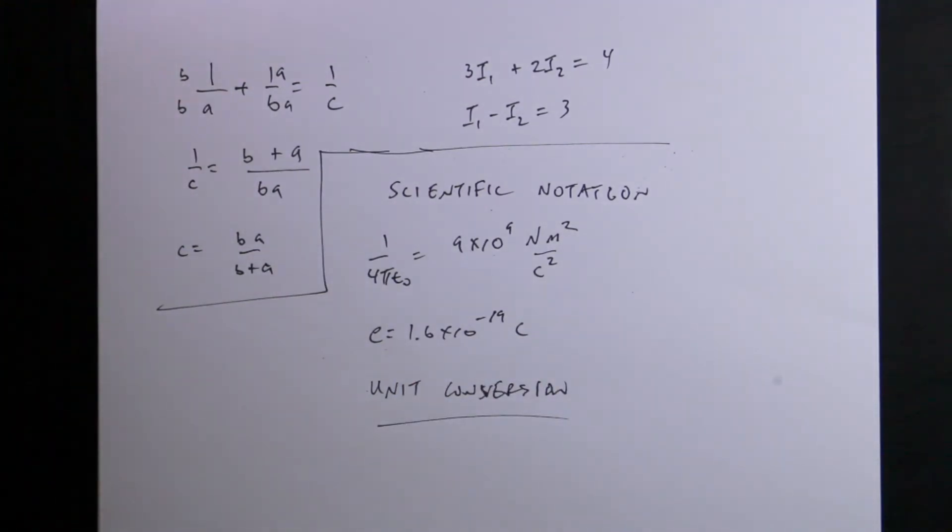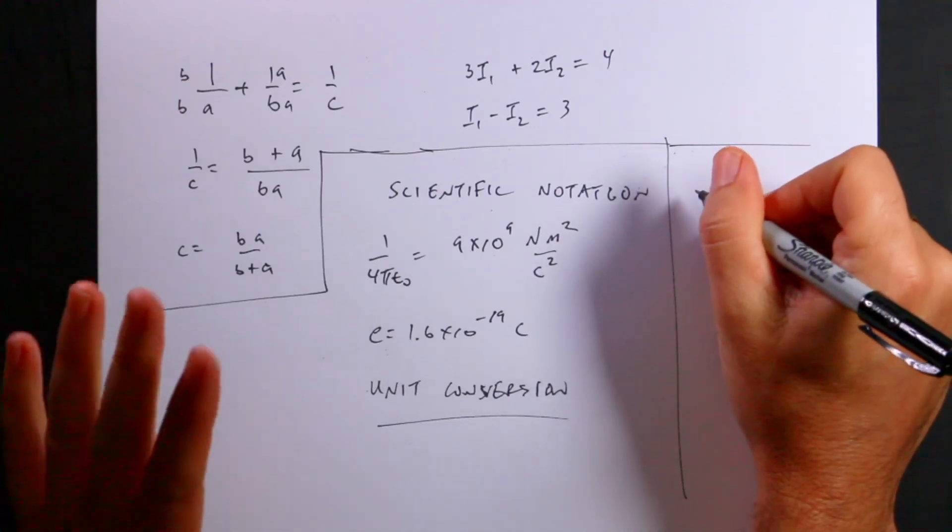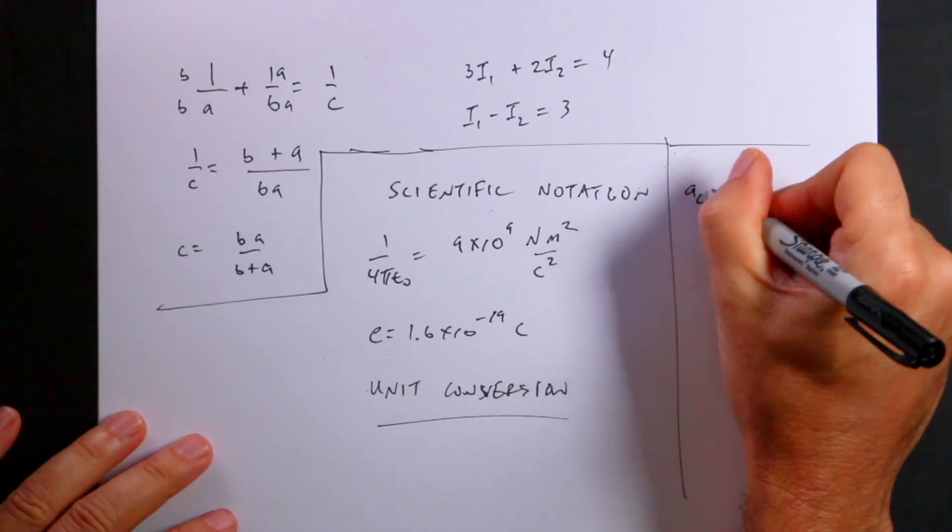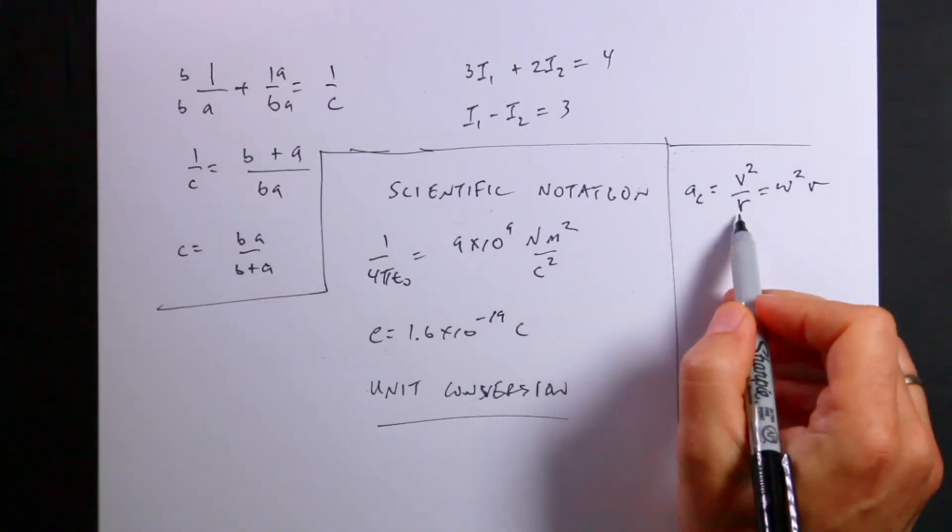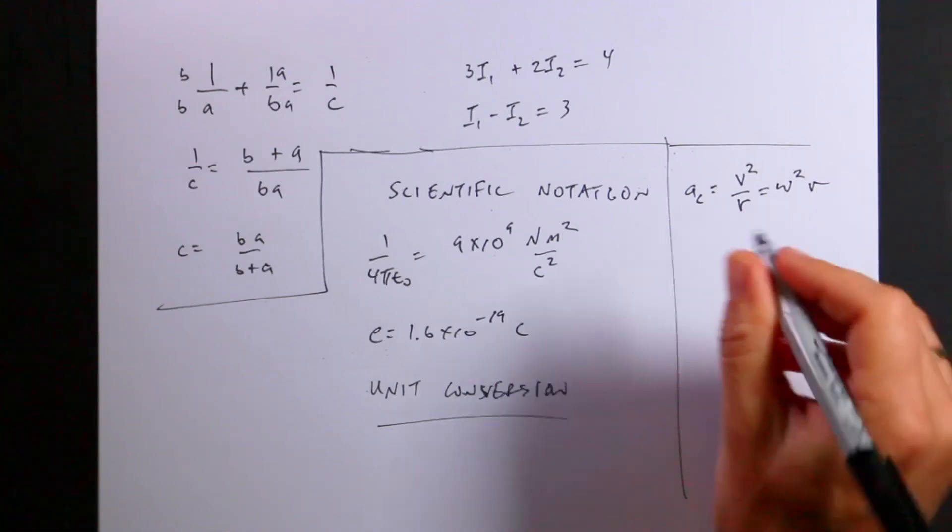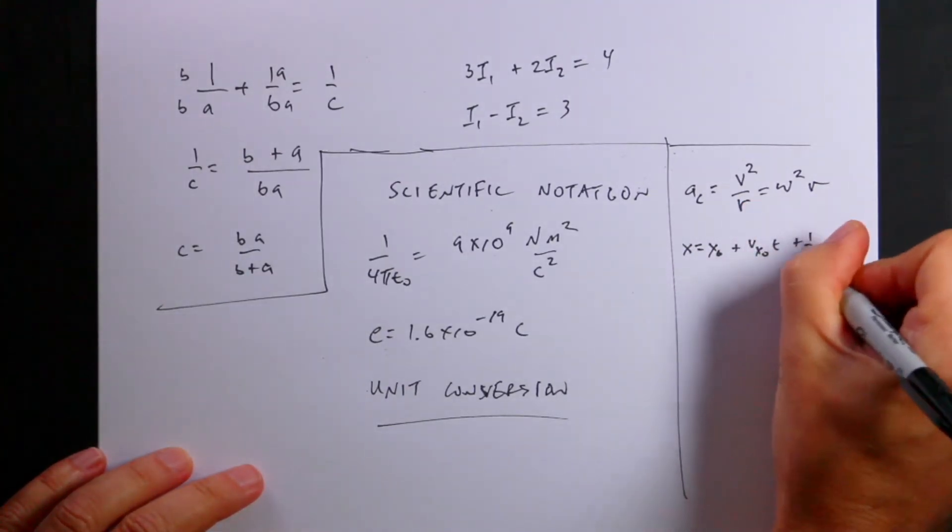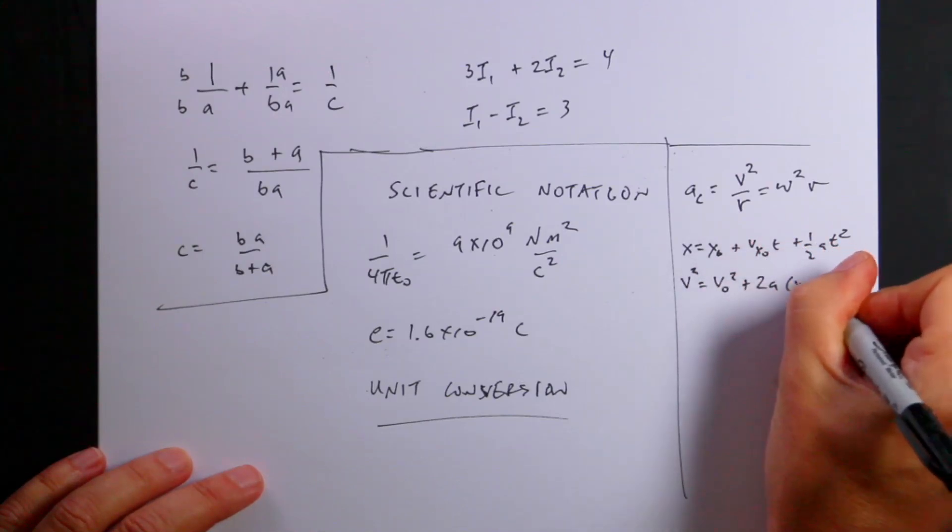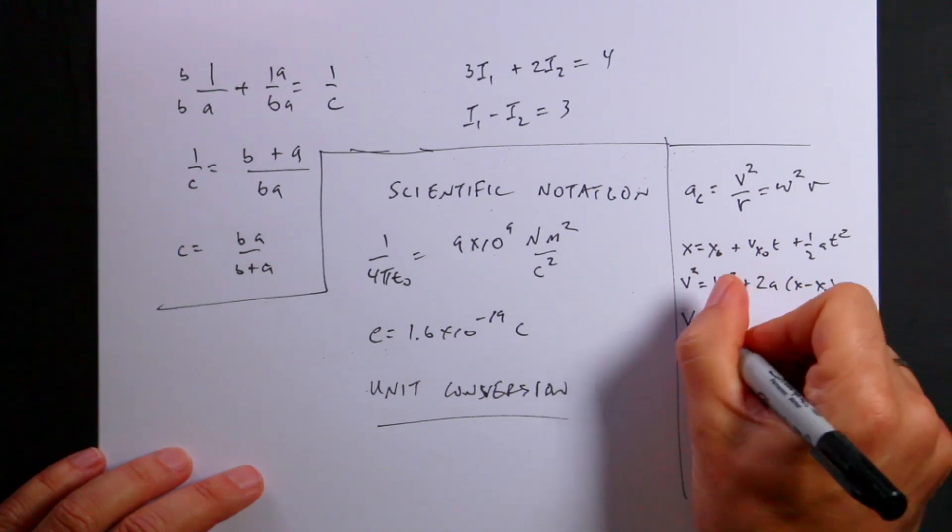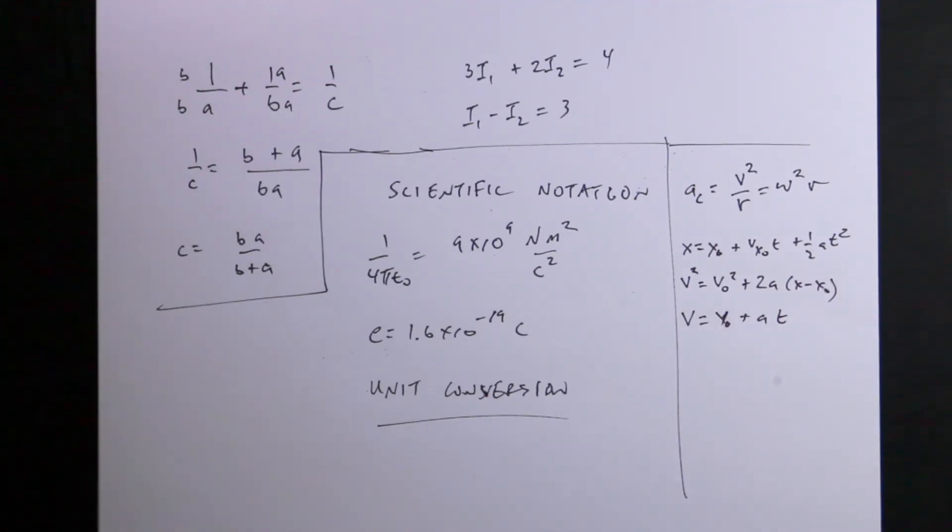I think if you know all that stuff, you should be ready to go. There's a couple things that come up from time to time. There's the circular acceleration. If you don't memorize this, I think you're probably okay. But if you have an object moving in a circle, it has a circular acceleration of v squared over r or omega squared times r. So v is the velocity, R is the radius of the circle, and omega is the angular velocity. That does come up. You have kinematic equations like x equals x naught plus v x naught t plus 1 half a t squared. You have v squared equals v naught squared plus 2a x minus x naught. You have v equals v naught plus a t. Those come up. If you don't memorize the work energy stuff, I don't think that's a problem, but you have to understand what that means.